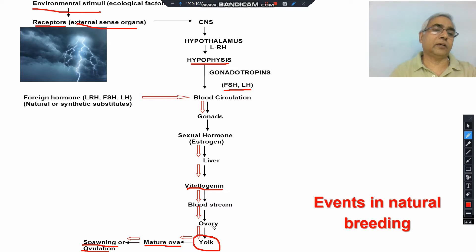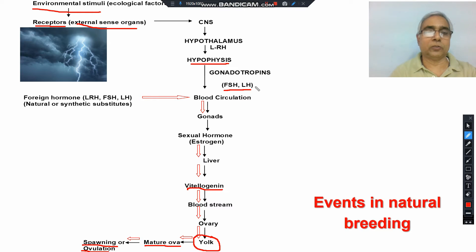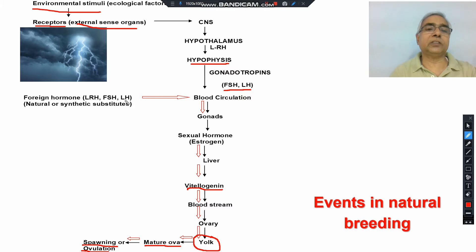In induced breeding technique, since we cannot exactly create the natural favorable environment — clouds, thunderstorms, rain — the central nervous system cannot be activated. Without CNS activation, LHRH and FSH-LH will not be released, gonads will not mature, vitellogenin will not be synthesized, and no mature ova will be formed. In induced breeding, we take FSH-LH hormones released from the pituitary gland from a foreign source — ideally the same fish species, which is more effective — and inject them directly into the blood circulation of the fish.